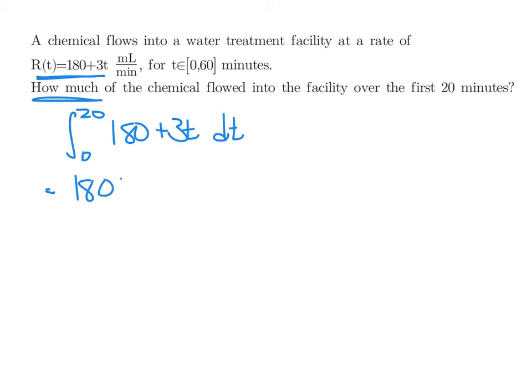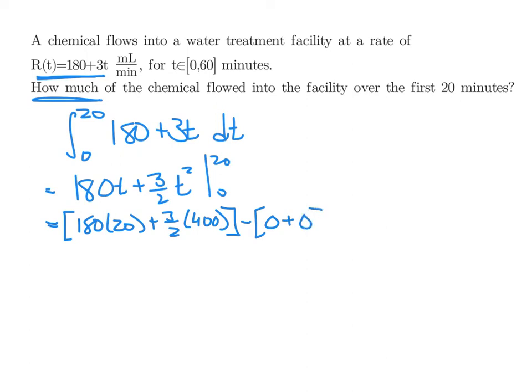And we know how to calculate that. The integral of 180 plus 3T is 180T plus 3 halves T squared. And we'll evaluate from 0 to 20. So if we plug in 20, we'll have 180 times 20 plus 3 halves times 20 squared minus 180 times 0 plus 3 halves times 0 squared.